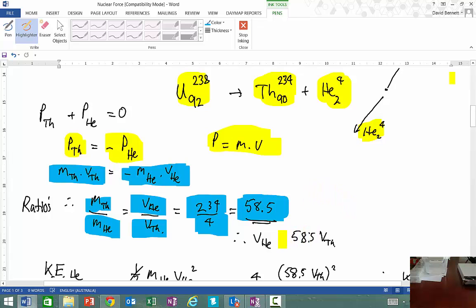In other words, the velocity of the helium must be 58.5 times the velocity of the thorium. And that makes sense because the mass of the helium is much lighter than the mass of the thorium. So therefore it must travel much greater speed, much greater velocity in order to have the same momentum.